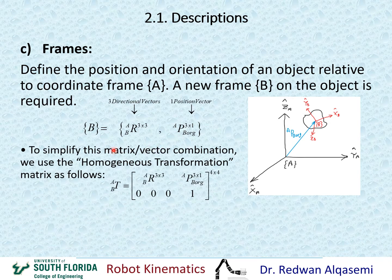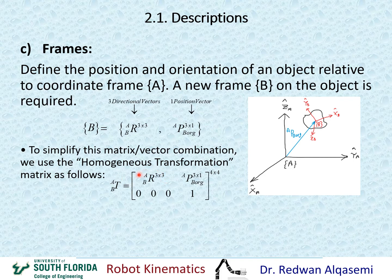To simplify the matrix and vector combination, we can use the homogeneous transformation matrix, which includes both in one 4×4 matrix. We call this transformation matrix T of B relative to A. The rotation portion goes in the top-left 3×3 corner, and the position vector goes in the top-right 3×1 corner. The bottom row is always zero, zero, zero, one — giving us a 4×4 transformation matrix.